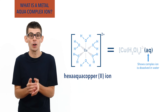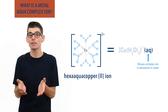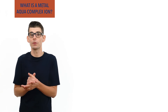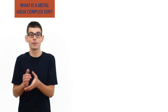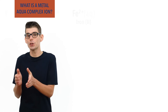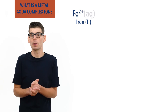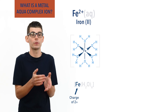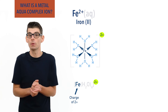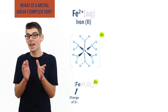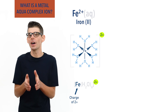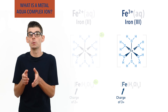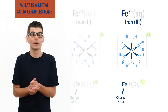The charge or oxidation state of the metal ion is important. Iron can form ions with two different charges: 2+ and 3+. If iron 2+ forms a complex of water ligands, the complex ion would have an overall charge of 2+: [Fe(H₂O)₆]²⁺. However, if iron 3+ forms a complex of water ligands, the complex ion would have an overall charge of 3+: [Fe(H₂O)₆]³⁺.